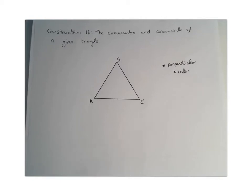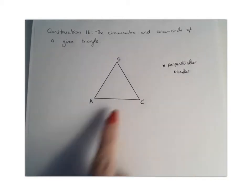To begin, we're going to find the perpendicular bisector of two of the lines in our triangle. It doesn't matter which ones you pick, so I'm going to start with AC.